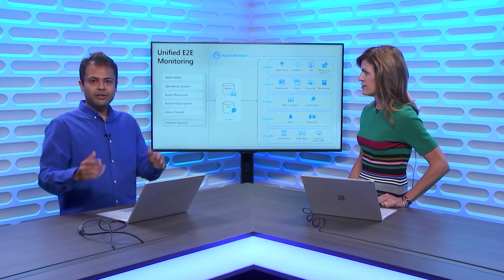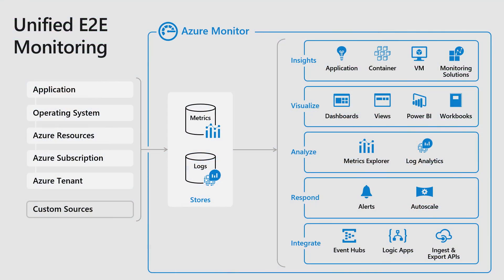Azure Monitor lets you collect data from your applications, from your infrastructure — be it containers, virtual machines, or network — and these could be on-premises resources, on Azure, or a third-party cloud provider. You can even send custom data through APIs. All of that flows into our metrics or logs database as raw telemetry, and then there are solutions built on top — giving you insights, diagnostics, and visualizations. Application Insights is now a feature of Azure Monitor, and similarly we have insights for containers, virtual machines, and solutions for SQL, storage, and so on.